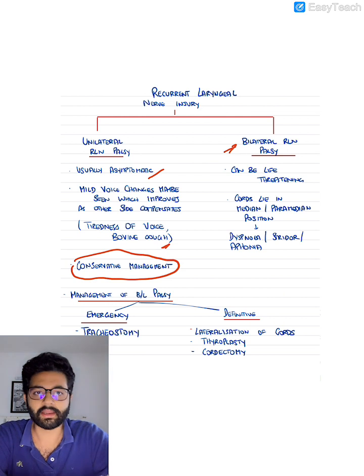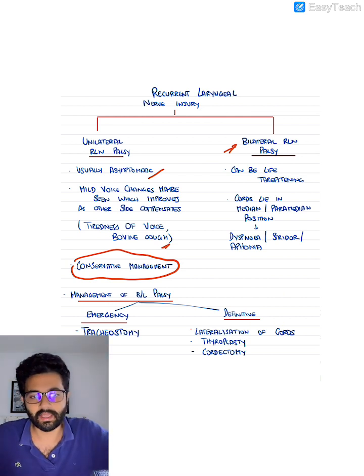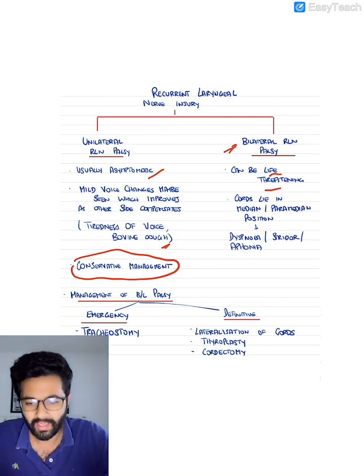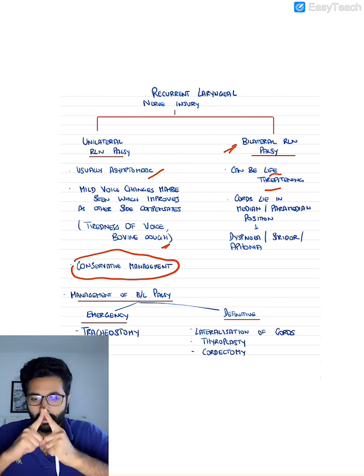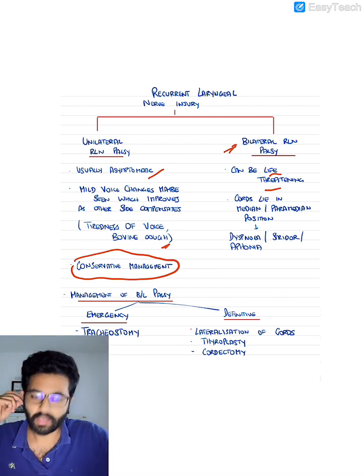Coming to bilateral recurrent laryngeal nerve palsy, this is a little more complicated and this can be life-threatening. Because as we know, the recurrent laryngeal nerve supplies the posterior cricoarytenoid which is the only abductor. Abductor means the muscle that splits the vocal cords. The recurrent laryngeal nerve supplies the posterior cricoarytenoid which is the only abductor of the vocal cords.